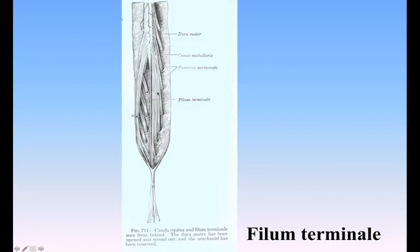The filum terminale is the delicate filament, about 20 cm in length, prolonged downward from the apex of the Conus Medullaris. It consists of two parts, an upper and a lower. The upper part, or filum terminale internum, measures about 15 cm in length and reaches as far as the lower border of the second sacral vertebra. It is contained within the tubular sheath of dura mater and is surrounded by the nerves forming the Cauda equina, from which it can be readily recognized by its bluish-white color. The lower part, or filum terminale externum, is closely invested by and inherent to the dura mater, extending downward from the apex of the tubular sheath and attached to the back of the first segment of the coccyx.